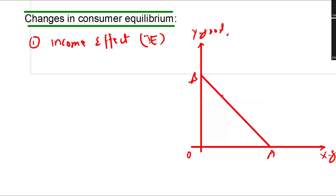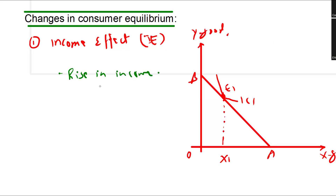Let's assume the initial equilibrium takes place at a point where the initial indifference curve IC1 forms equilibrium with the initial budget line at E1, and the consumer purchases X1 quantity of X good. We take the assumption that there is a rise in consumer's income, and the second assumption is that X is a normal good.